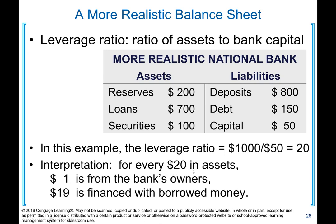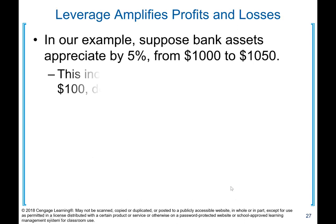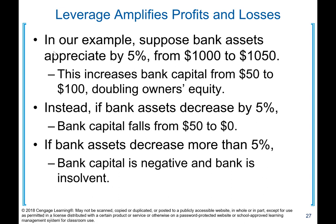Interpretation: for every $20 in assets, $1 is from the bank's owners and $19 is financed with borrowed money — a very highly leveraged business. Leverage amplifies profits and losses. In our example, suppose bank assets appreciate by 5%, from $1,000 to $1,050. This increases bank capital from $50 to $100, doubling owner's equity. Instead, if bank assets decrease by 5%, bank capital will fall from $50 to $0. If bank assets decrease more than 5%, bank capital is negative and the bank is insolvent. Leverage cuts both ways.